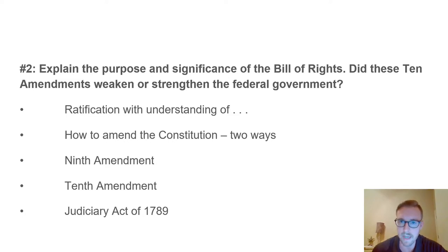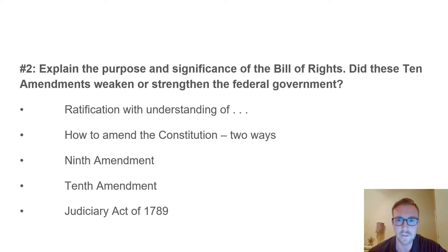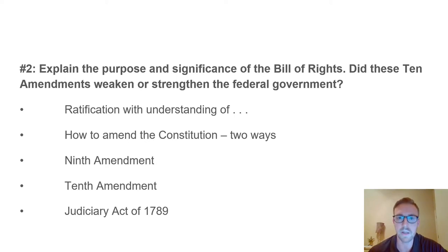Amendment 10 caps off the Bill of Rights, stating that powers not given to the federal government are reserved to the states and the people respectively. If a power isn't listed as belonging to the federal government, that power is reserved to the states and people. It's meant to clarify that the federal government can only do what powers are stated—it has no power beyond what was listed.